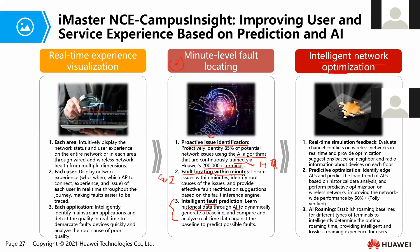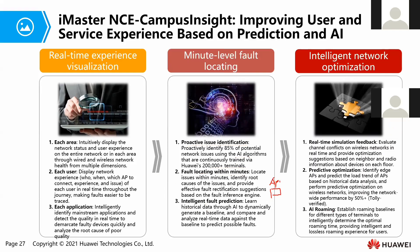The third feature is intelligent network optimization. Campus Inside can simulate feedback in real time — for example, if there is a channel conflict in the wireless network, Campus Inside will automatically use AI to provide optimization suggestions based on neighbor radio information. It can also predict optimizations and perform AI roaming. In a typical wireless network, roaming occurs between AP1 and AP2 when a user moves between coverage areas.